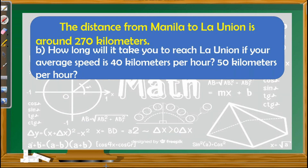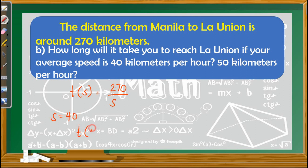For letter b: how long will it take you to reach La Union if your average speed is 40 kilometers per hour or 50 kilometers per hour? Using our function from letter a, t(s) = 270/s. We can find the time at an average speed of 40. If s is 40, then t(40) = 270/40. Dividing these two values, we get 6.75 hours.